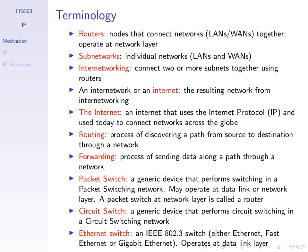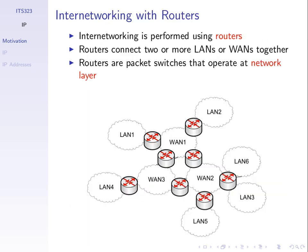Routing is discovering the best path; forwarding is sending data across that path. Some additional terminology: these devices that connect networks together are switches. Specifically, the internet uses datagram packet switching, so these are datagram packet switches — but we generally just call them a router, which is the more common name in the internet.